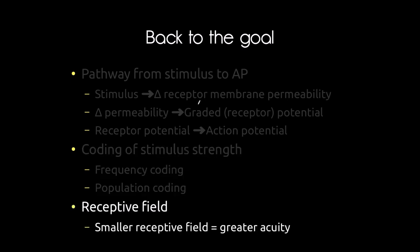An important concept is the receptive field — the spatial area that any given receptor cell is going to be sensitive to. For touch receptors in the skin, there is only a certain area of skin that any touch receptor can detect stimuli on. A smaller receptive field means greater acuity — greater ability to spatially differentiate two different stimuli. As receptive fields get smaller and smaller, we can have greater and greater acuity.